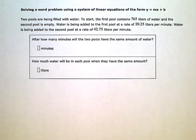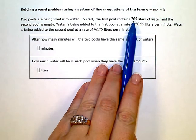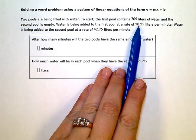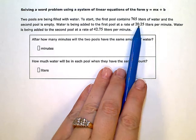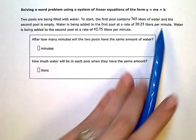My first question says, after how many minutes will the two pools have the same amount of water? Because I have a start value and then I'm adding or subtracting per minute for both pools, I know I'm going to be setting up slope intercept form or y equals form equations.